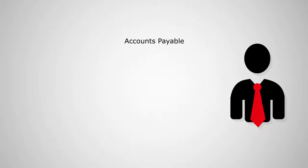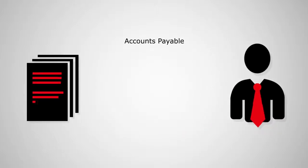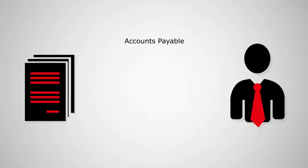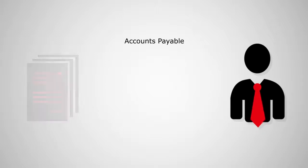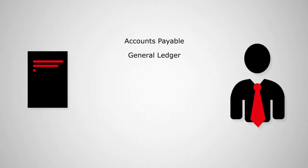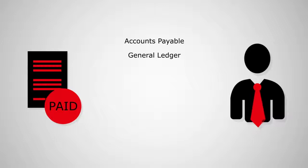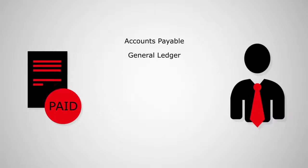Accounts Payable, which is typically chosen if the expenses are to be paid in Intact. The General Ledger, which is chosen if the expenses were already paid in Concur.